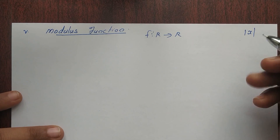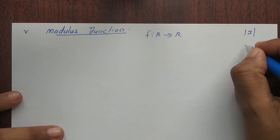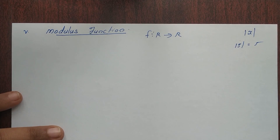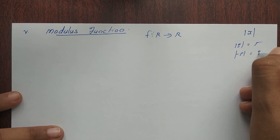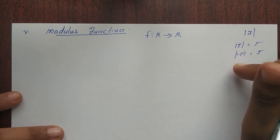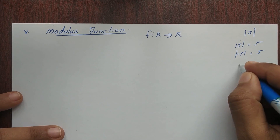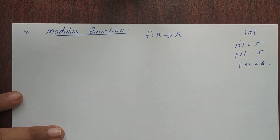If we have any input, we have 5 into modulus. Then minus 5 into modulus is 5. If we have a minus value, we get a positive value. Suppose minus 6 gives 6. This is the magnitude of the graph.